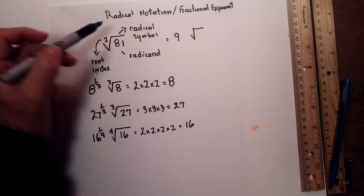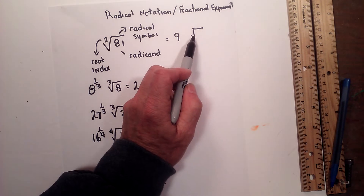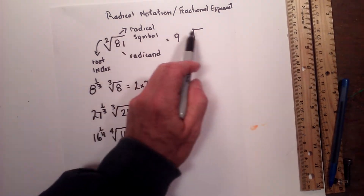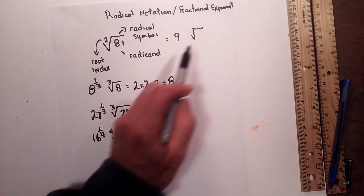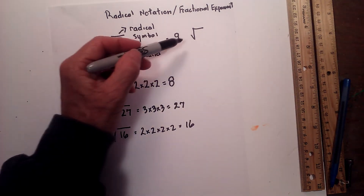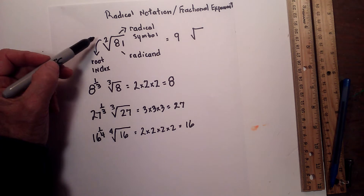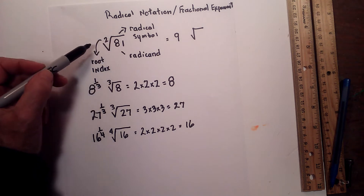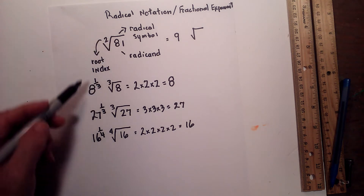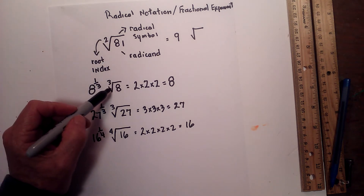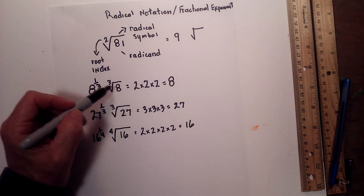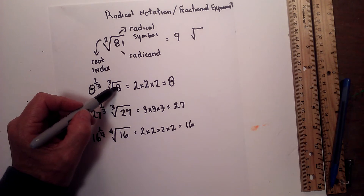Many times we see the second root index just as a square root, but 9 times 9 is equal to 81. Or you may have a radical notation like this.